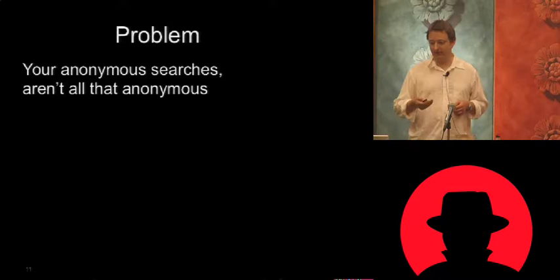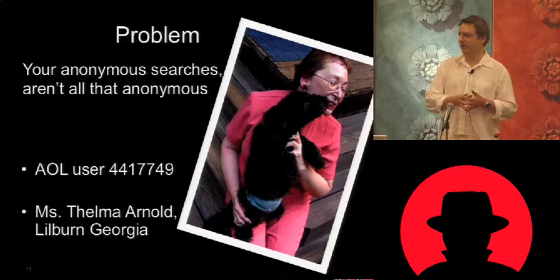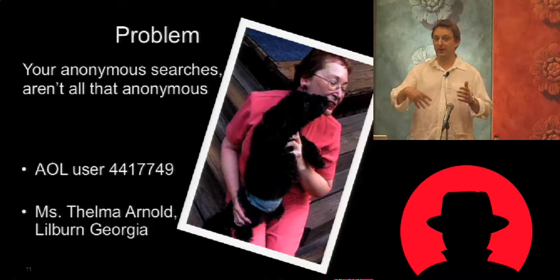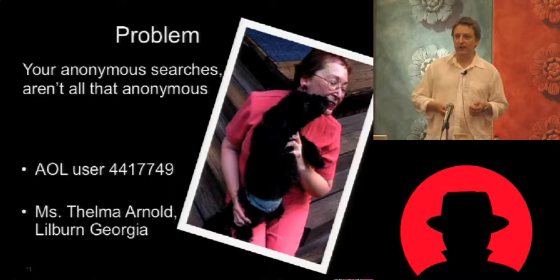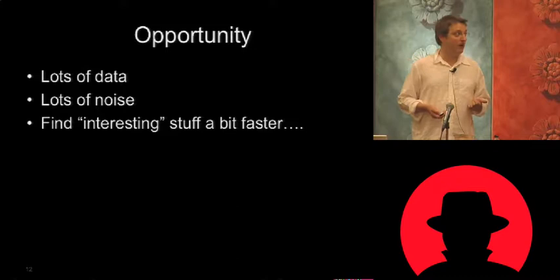There was the case of Thelma Arnold. In roughly 2006, AOL published a bunch of their search strings, and the New York Times identified AOL user 4417 as this lady in Georgia based on the searches she was making — like dog kennels, revealing she had a dog. Even when data is anonymized and real names are removed, it's still highly possible to link that data back to an individual. So you've got a lot of data and a lot of noise — the opportunity is finding the interesting stuff a little bit quicker.